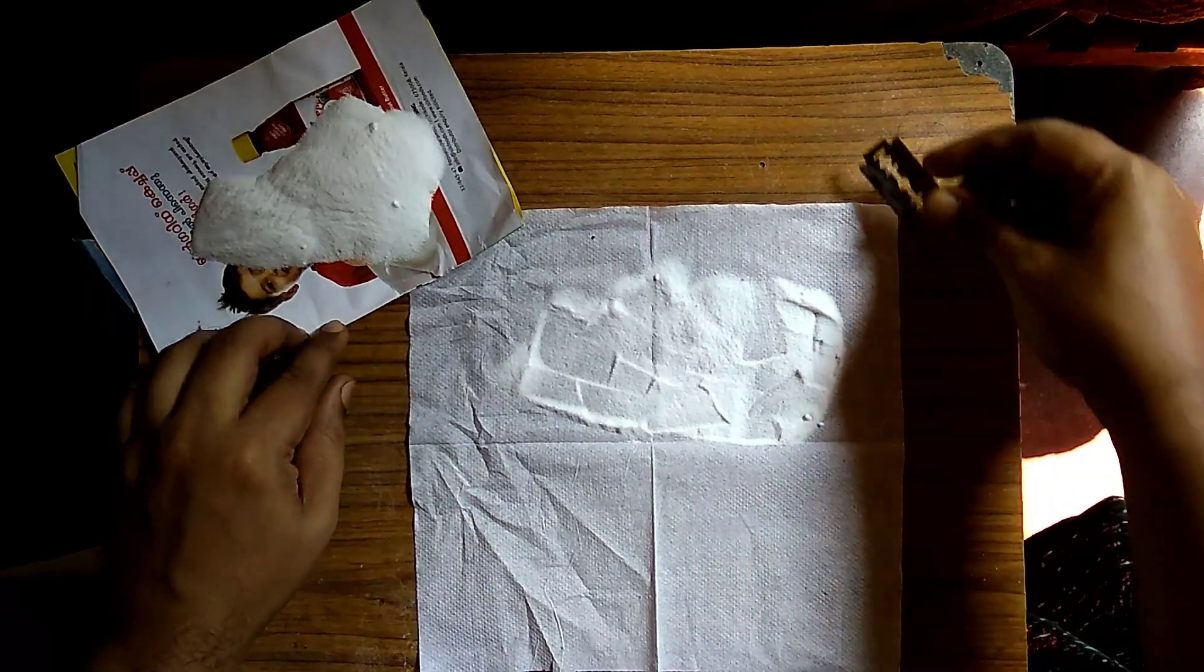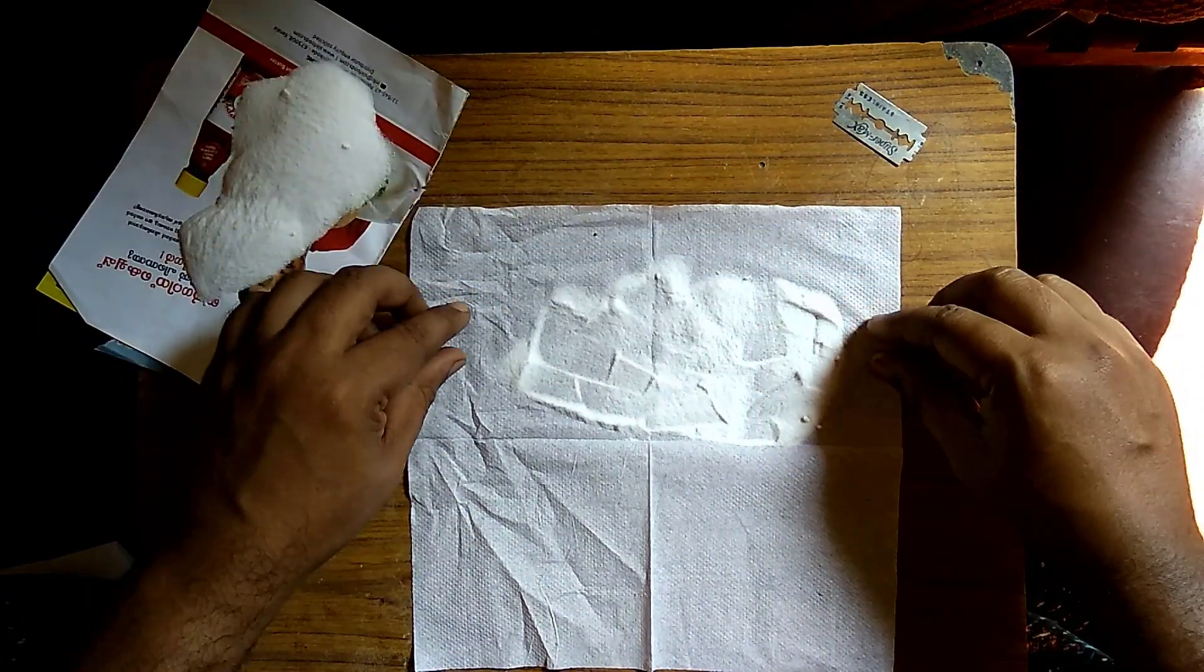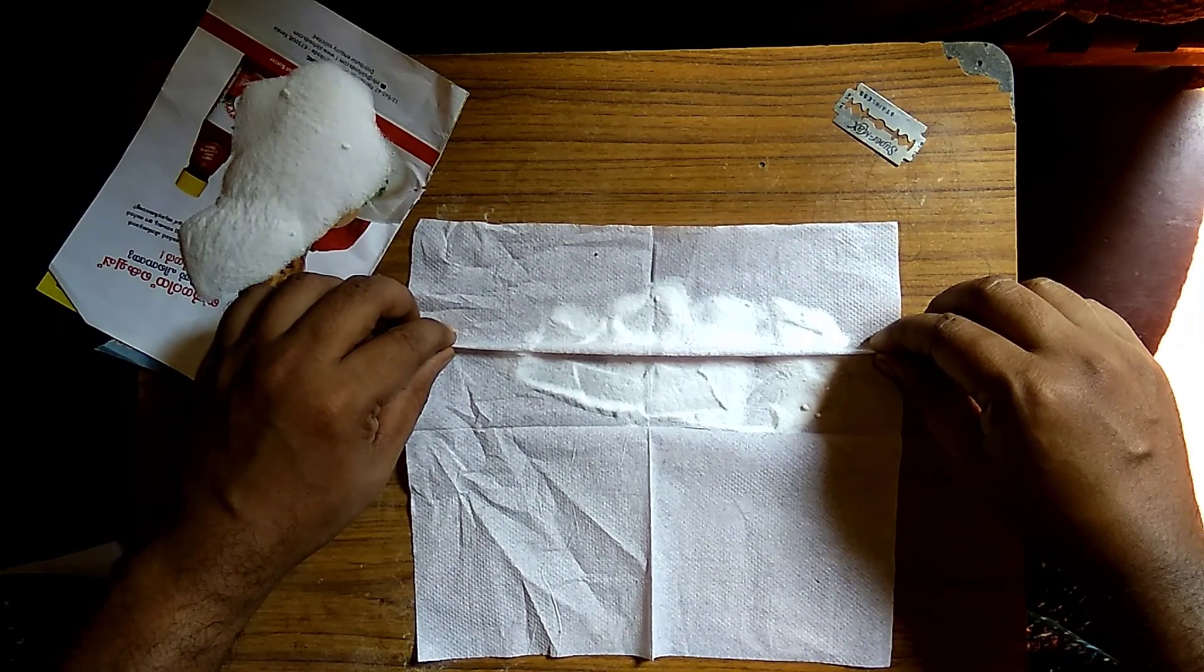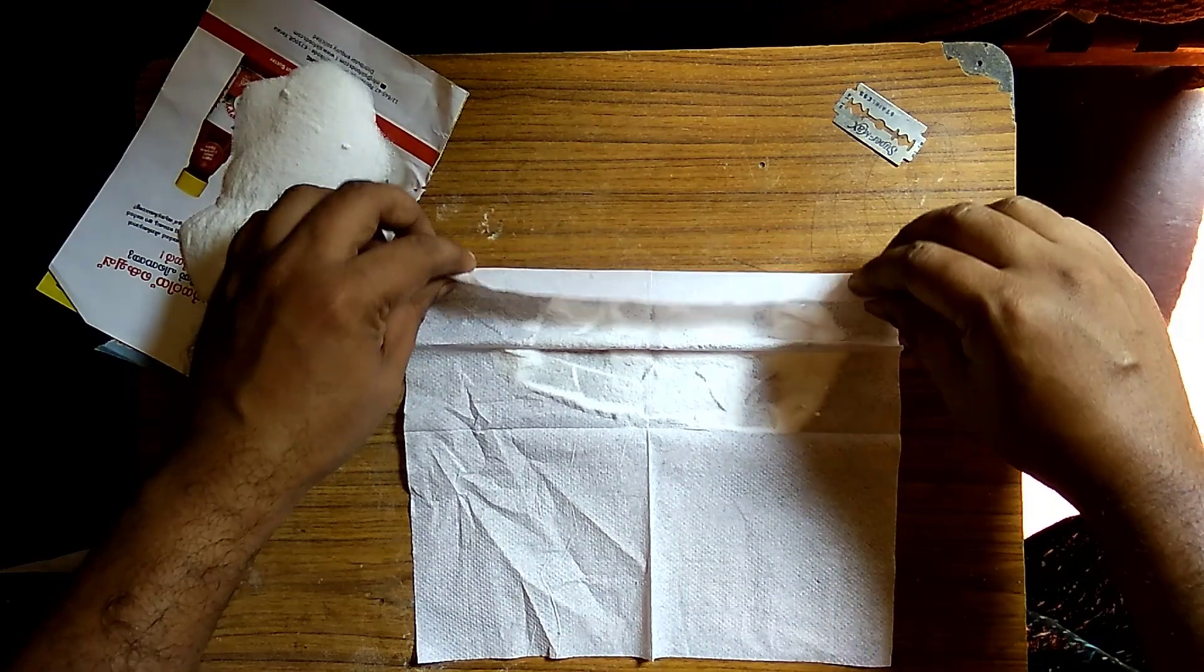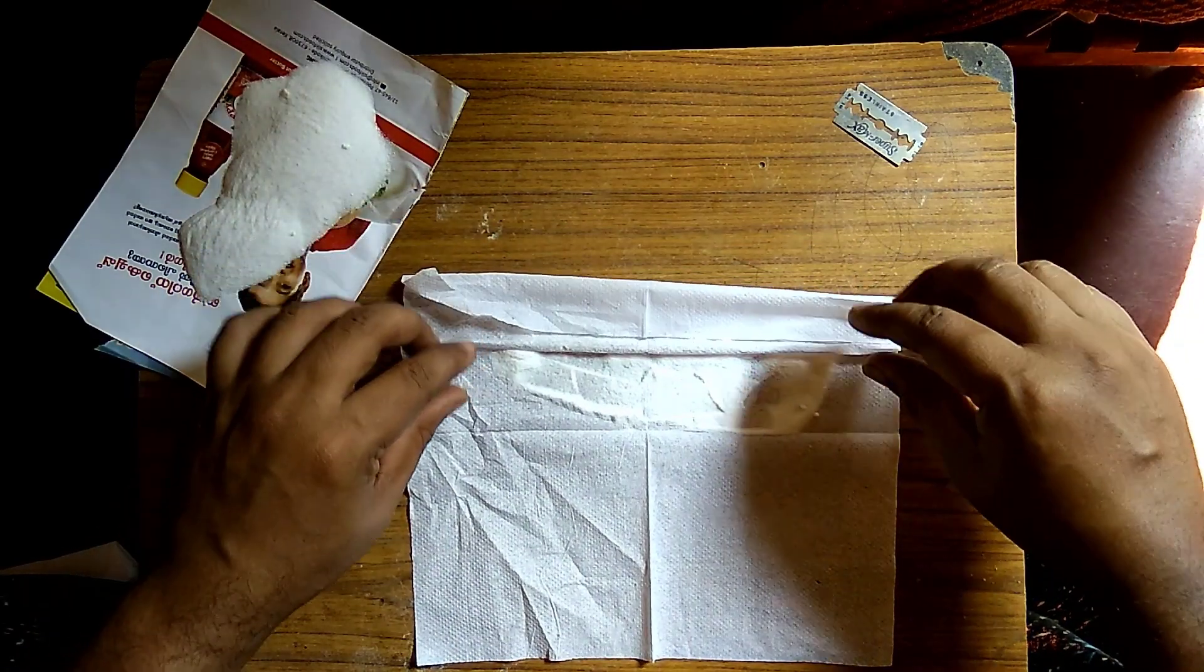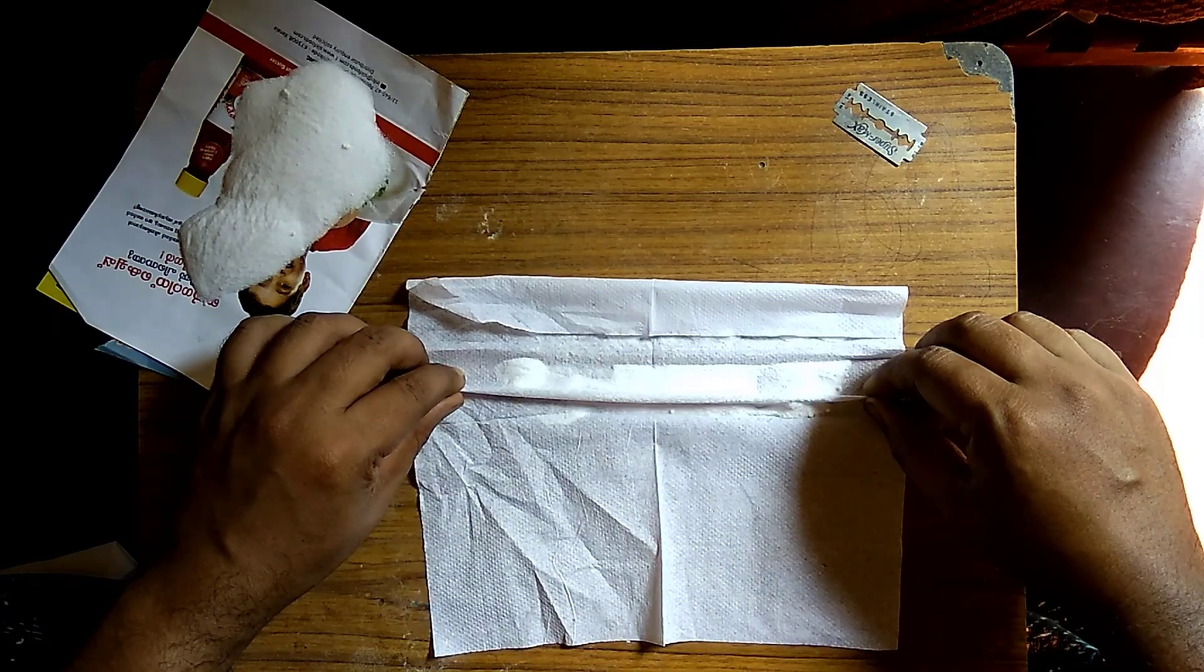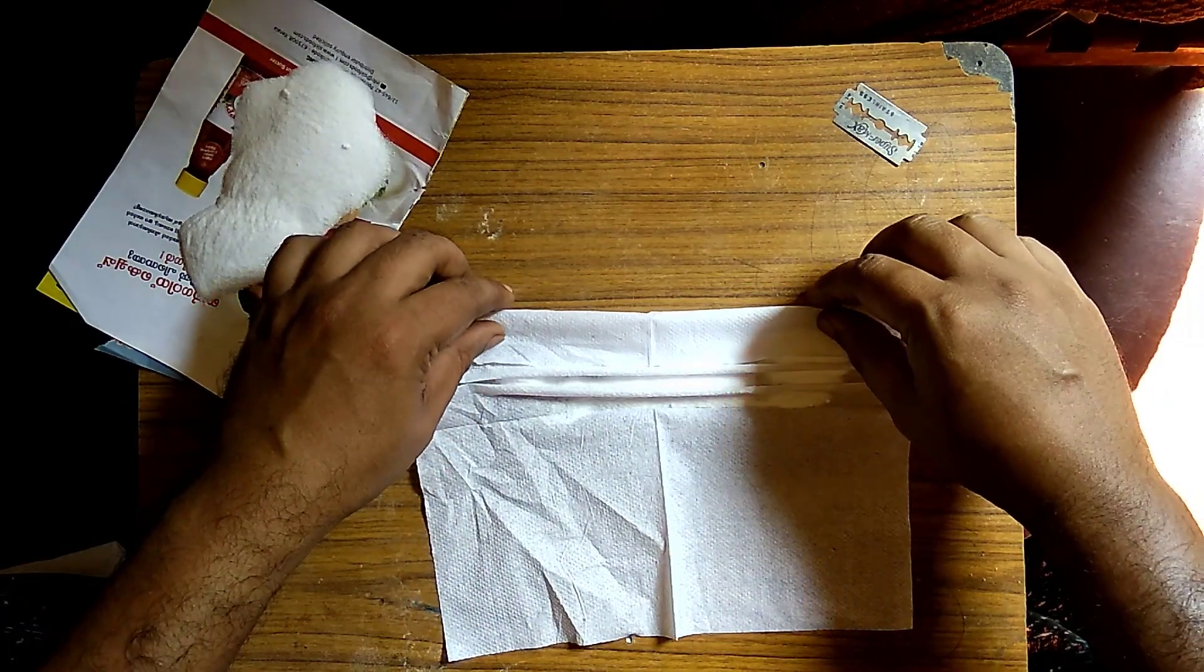Next we need to fold it like this. We need to fold it into two or three layers so that baking powder will be evenly between each fold. We need to do it very carefully otherwise tissue paper will tear off.